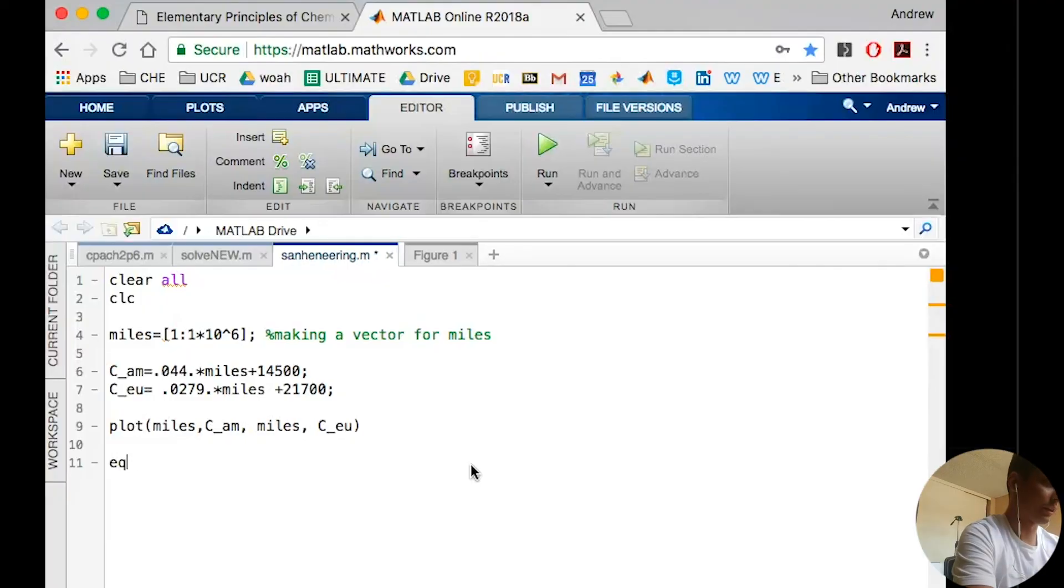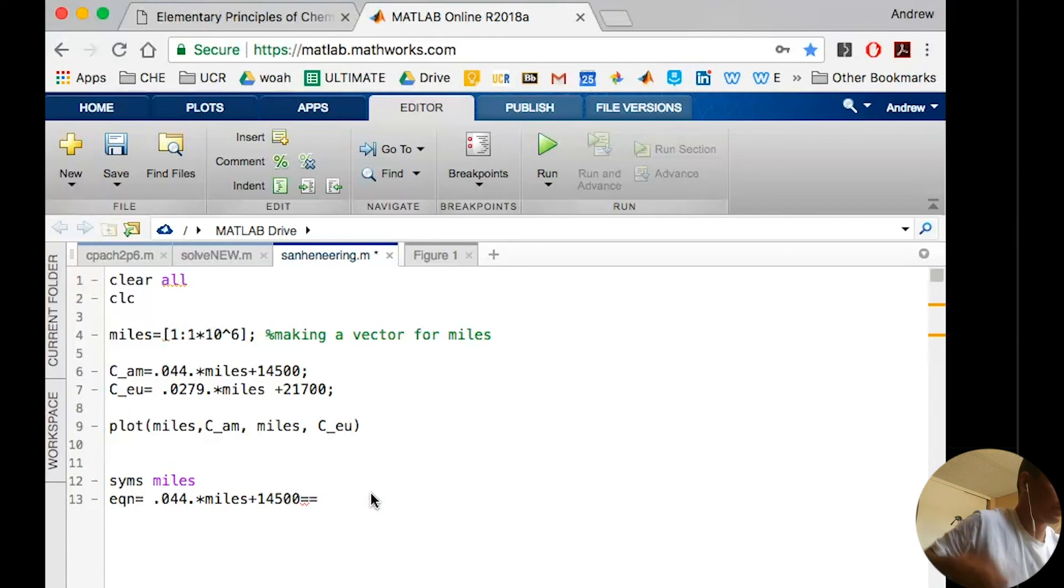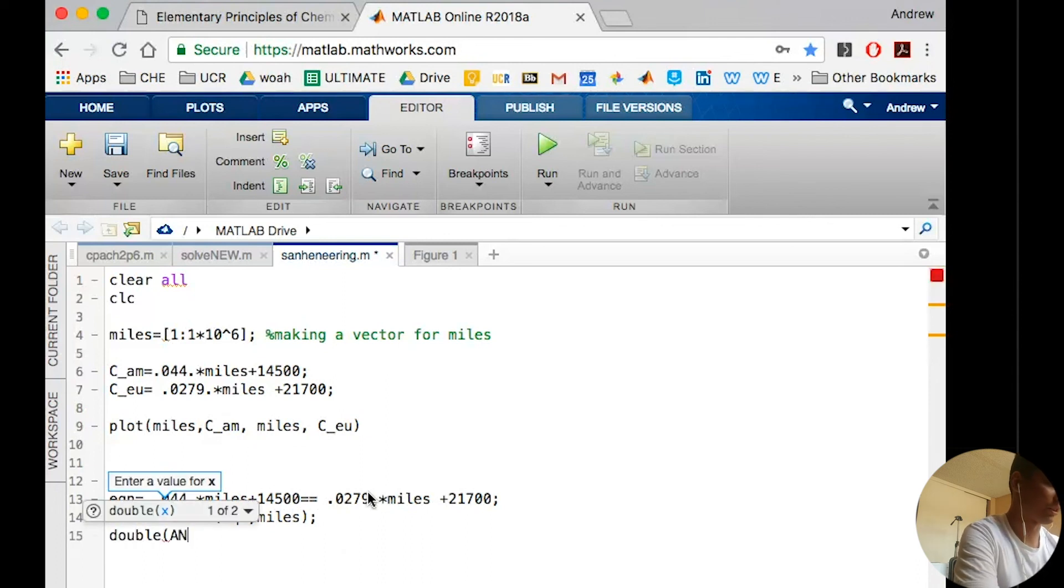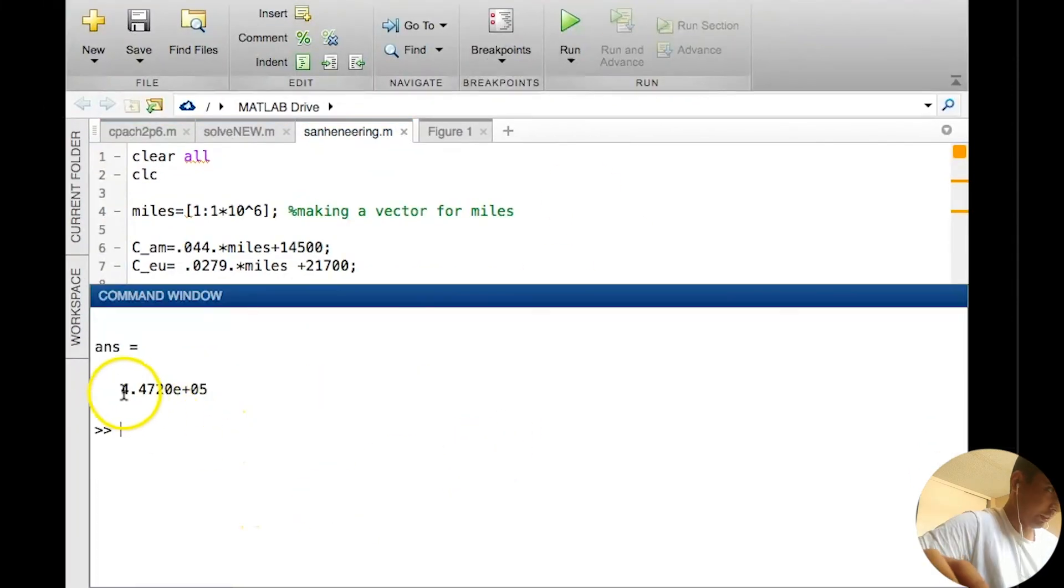In order to do that, we write equation. We need some symbolic variables. I'm going to do syms miles. Now it's going to treat miles as a symbol and set that equal to the next equation. We're going to get some answer. Let's call it answer is going to be the MATLAB solve function of the equation for miles. We're going to convert this to a double because it's going to be a weird notation. We're just going to do double of answer. If we run this, this should be our answer. There we go. 4.472 times 10 to the 5. That's 447,000.